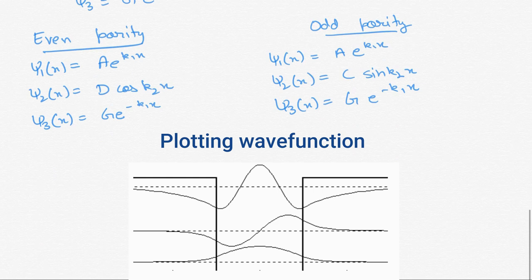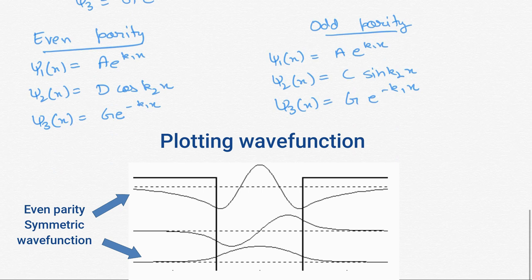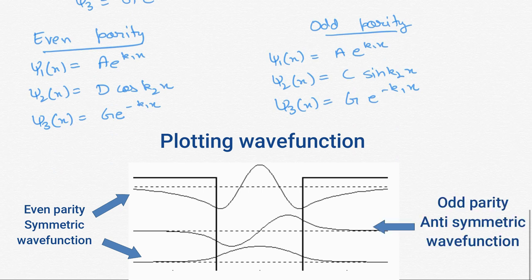From the wave function plots, the bottom and top solutions are symmetric about x = 0, corresponding to even parity states, while the middle solution is anti-symmetric about x = 0, corresponding to an odd parity state.